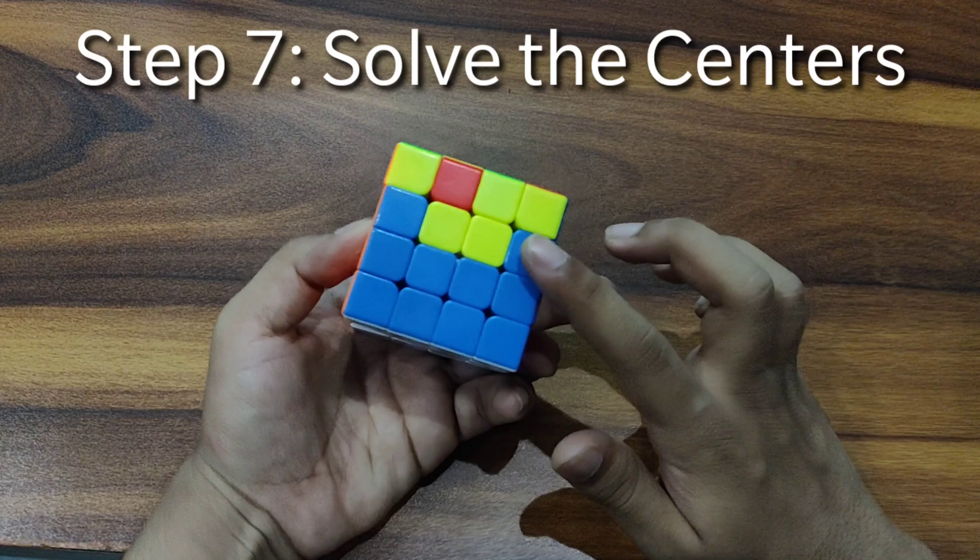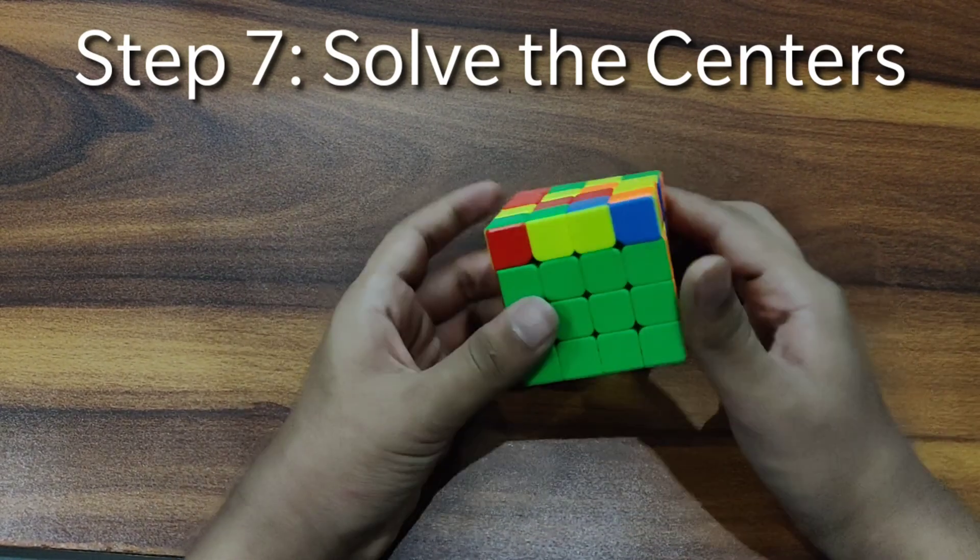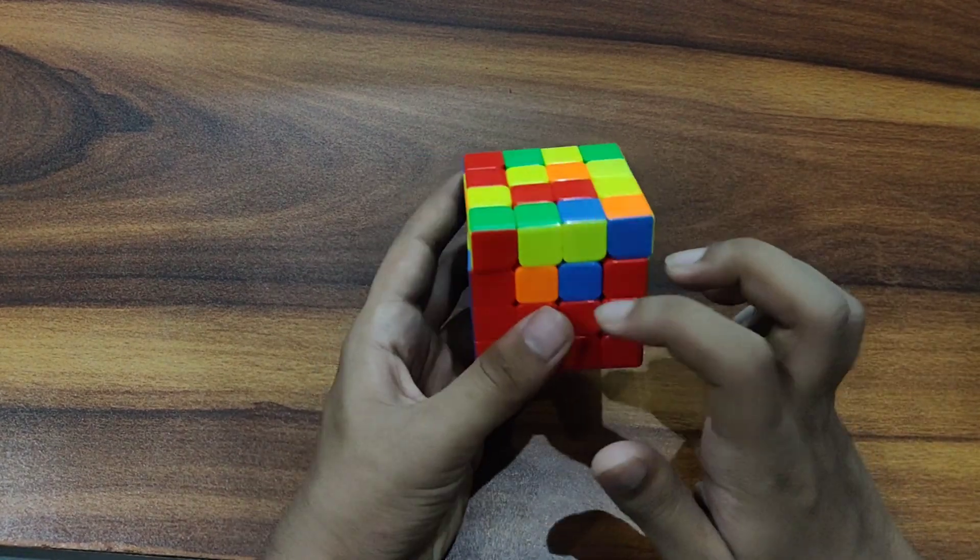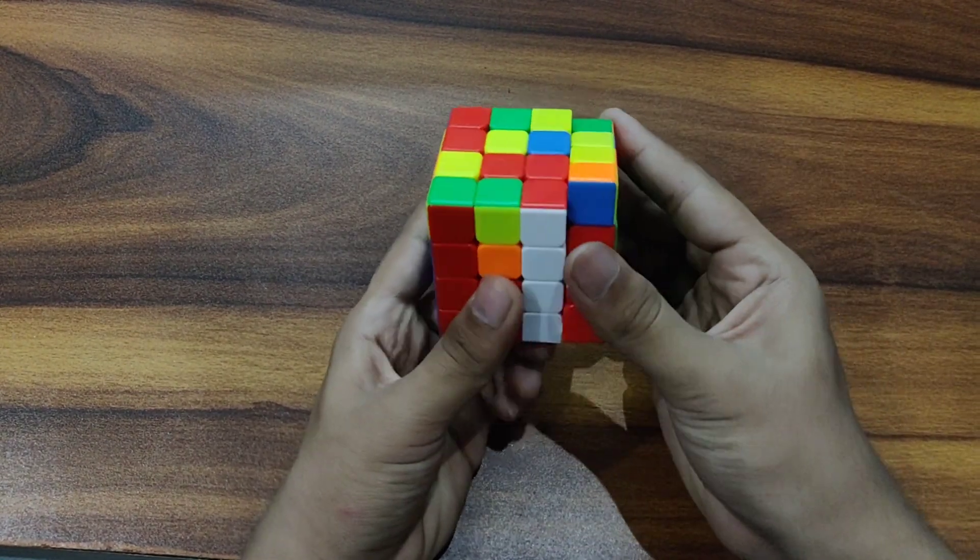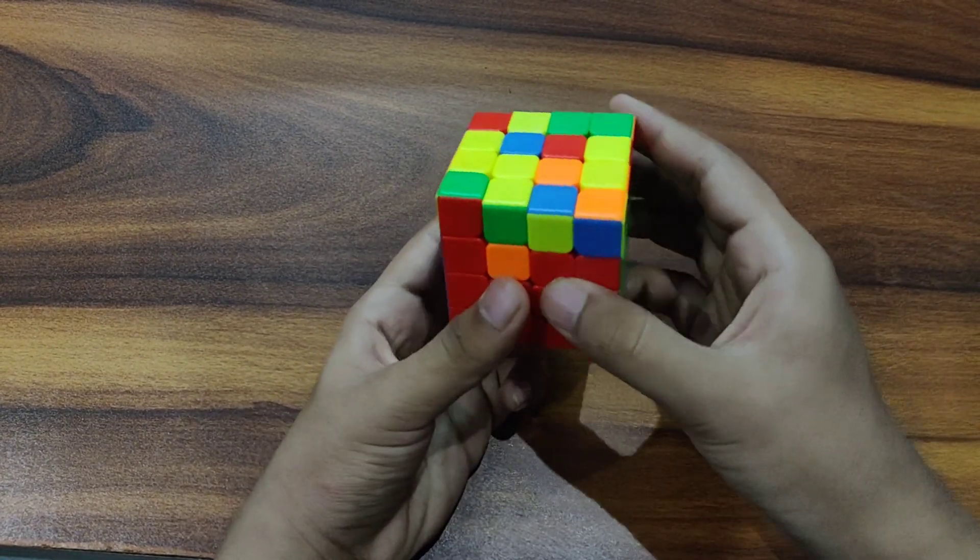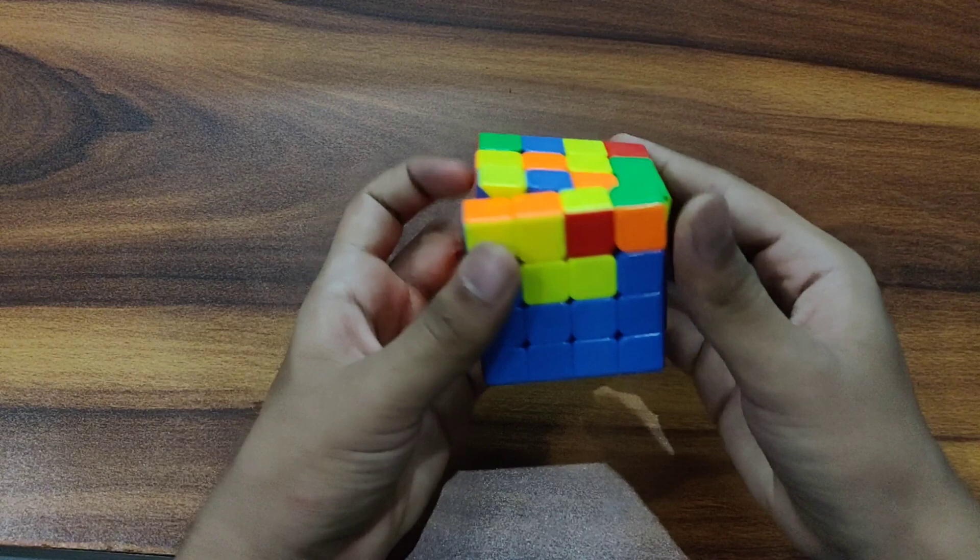So now we have to solve these centers. We can solve it by the top layer and using these M and U moves. So we can bring it up here and do like this to pair this up and move it away and then insert it. You can do the same stuff with the left side.